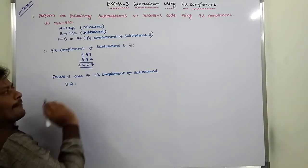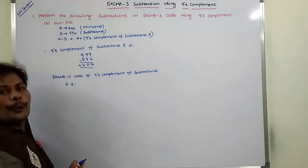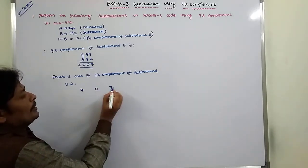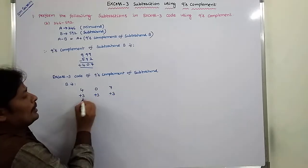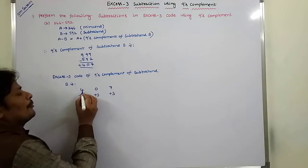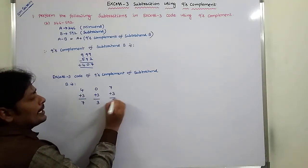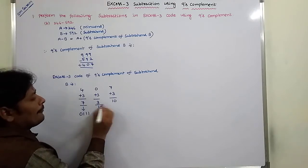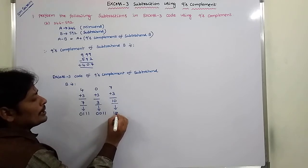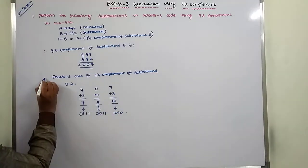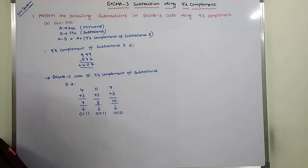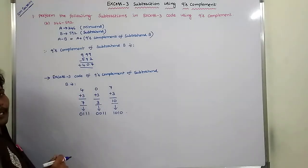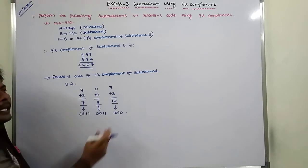We are getting 407 as the 9s complement. To get the XS3 code, we add plus 3 to each and every digit: 4 plus 3 is 7, 0 plus 3 is 3, 7 plus 3 is 10. The equivalent binary forms are: 0111, 0011, 1010. This is the XS3 code of the 9s complement of subtrahend B.